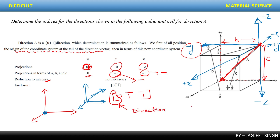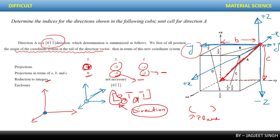If the brackets are circular brackets, they represent a plane. For direction vectors, square brackets are used with no comma separation between the indices. So I hope this first question is clear — how to write the Miller indices of a direction.